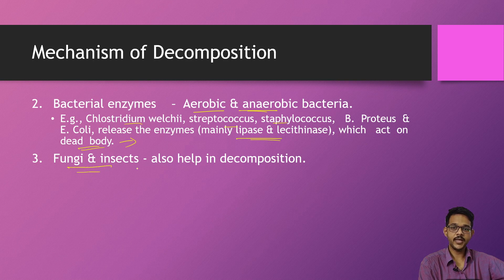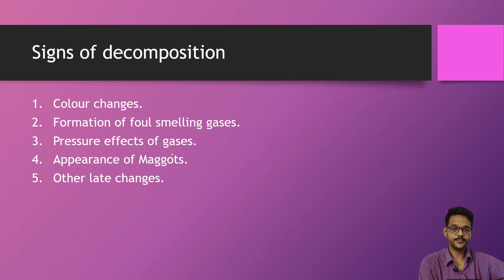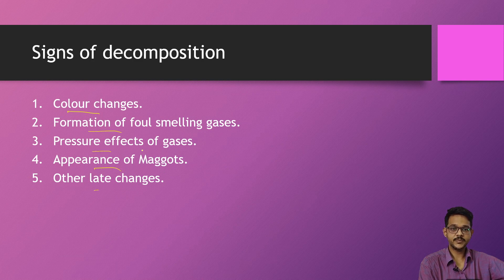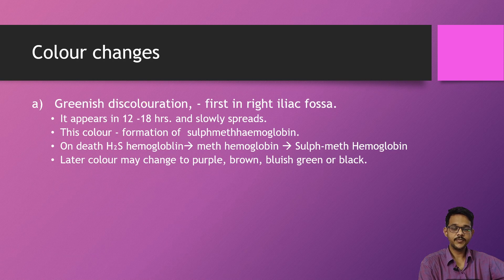The next mechanism is by action of fungi and insects, which also help in decomposition. Coming to the signs of decomposition, these include color changes, formation of foul-smelling gases, pressure effects of gases, appearance of maggots, and late changes.